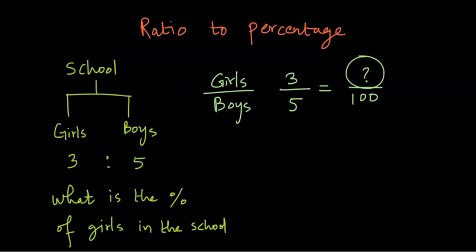In denominator we don't need number of boys, but we need the total number of students. When we are talking about percentage of girls in school, we are talking about percentage of girls among all the students. All the students comprise of boys as well as girls. So this ratio is wrong.